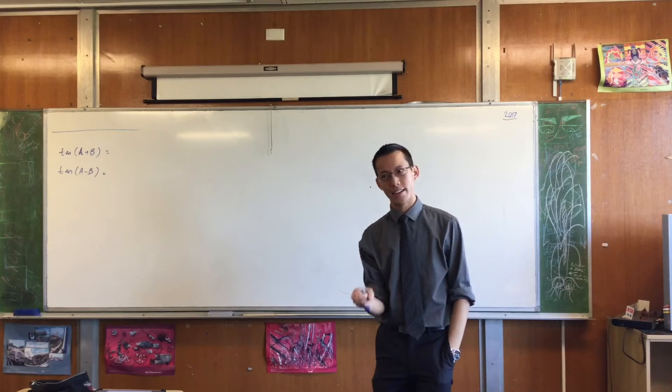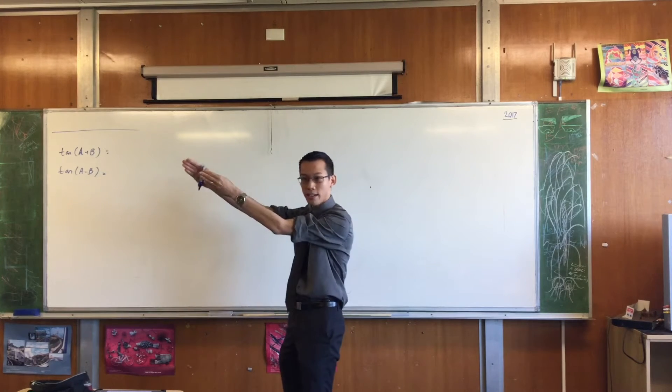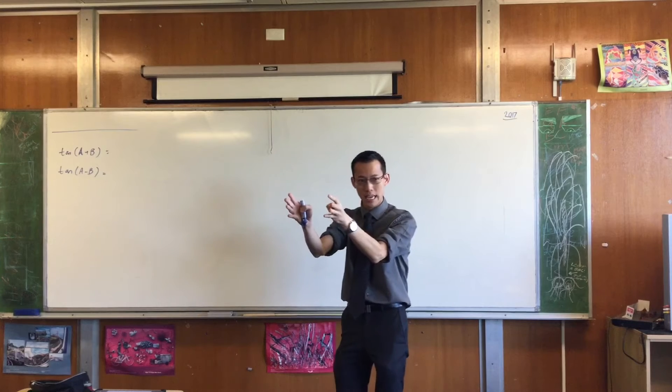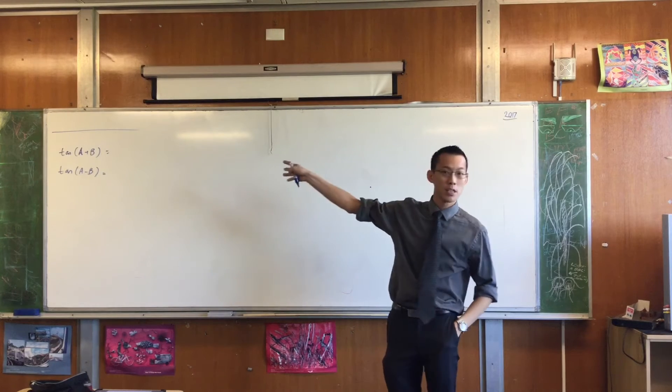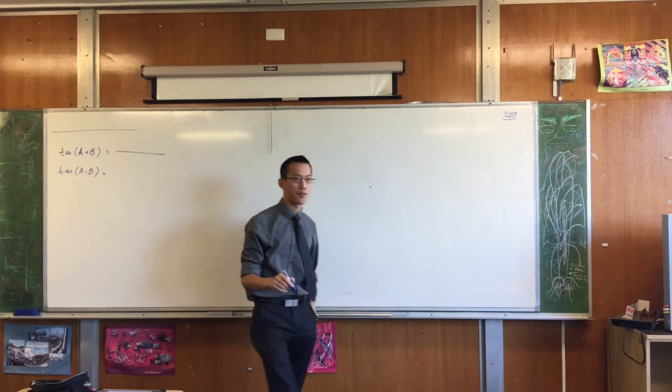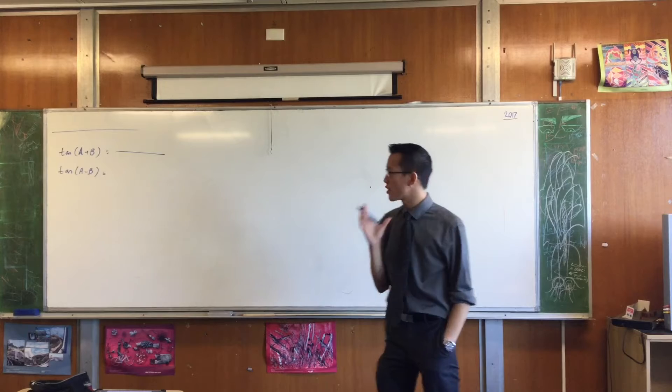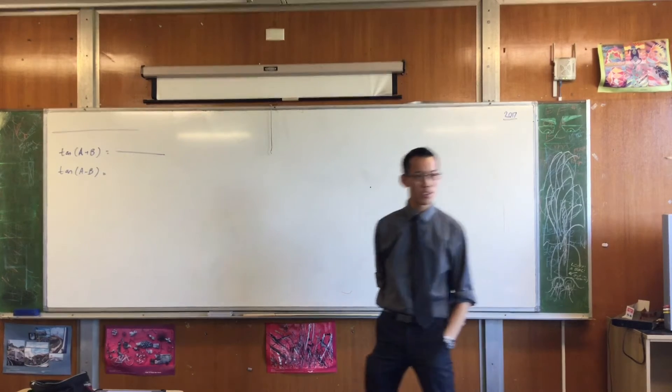And the tan A plus B identity, we got to after starting with sine, then we moved over to cos, and then we're like, well, tan is just sine over cos, so you just do the fraction and then something will turn up. Do you remember, because we did end up with a fraction, if you're just doing the sum of angles, we call this the sum identity for tan, what goes on the top? What's the numerator?